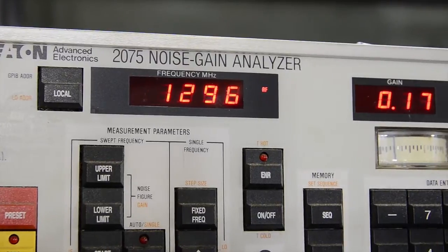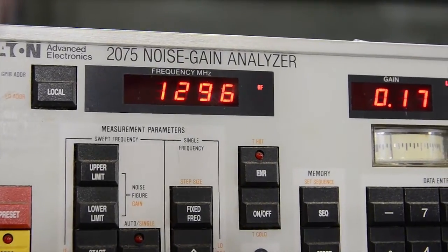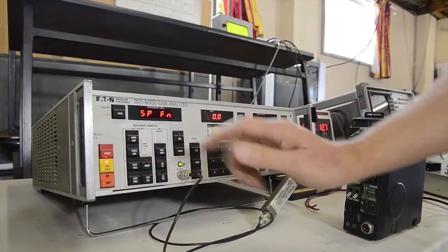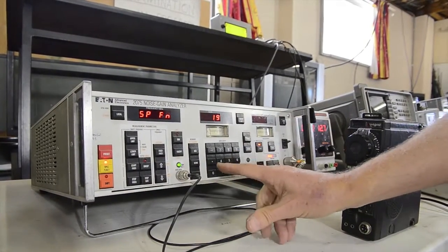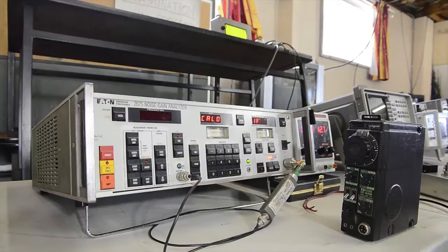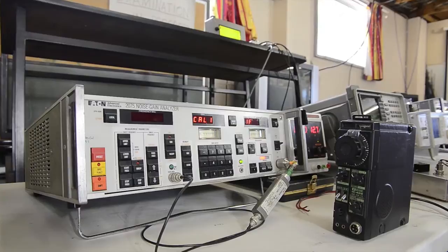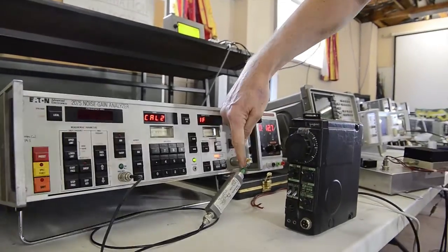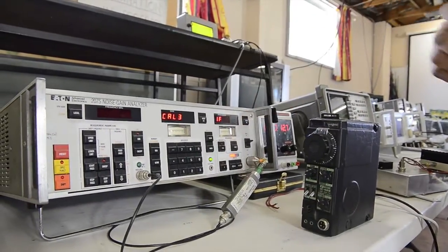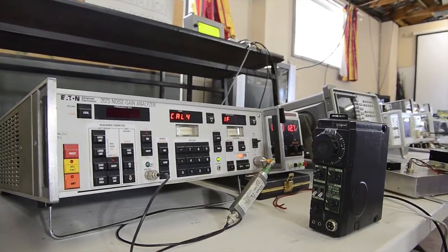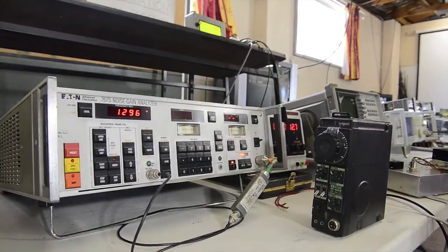This needs a recalibration that changes, noise figure meters change in time. So you've actually got to do an IF calibration and then a recalibration and then it will come up on the correct. At the moment, the noise head is connected directly to the input, so it should come up on 0, 0, 0, 0, 0. So it's always being noise, it doesn't always do that.